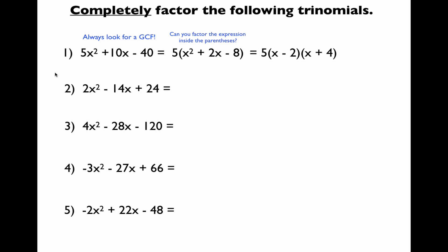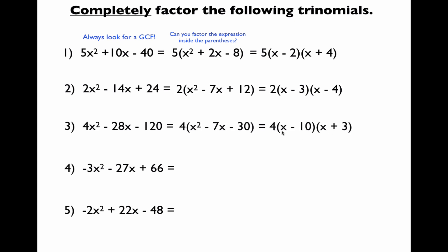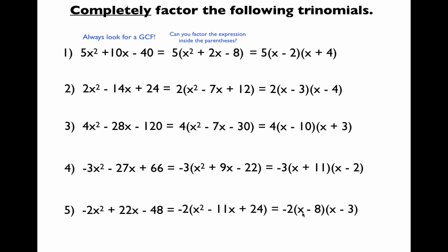Many problems on your assignment will involve a greatest common factor. For number 2, the GCF was 2; factors of 12 that add to negative 7 are negative 3 and negative 4. Number 3: factorization is 4 times x minus 10 times x plus 3. For numbers 4 and 5, remember the leading coefficients are negative, so factor out a negative GCF. Number 4: negative 3 times x plus 11 times x minus 2. Number 5: negative 2 times x minus 8 times x minus 3.